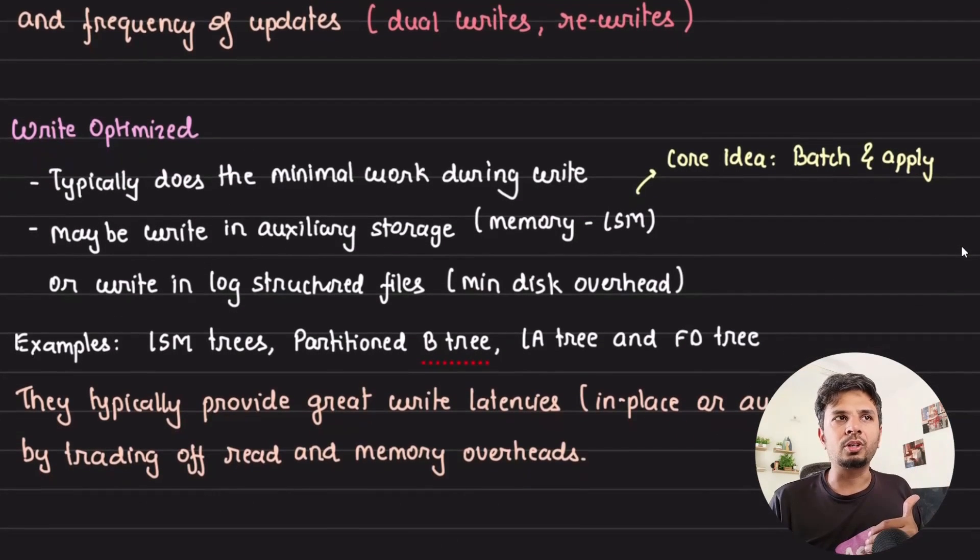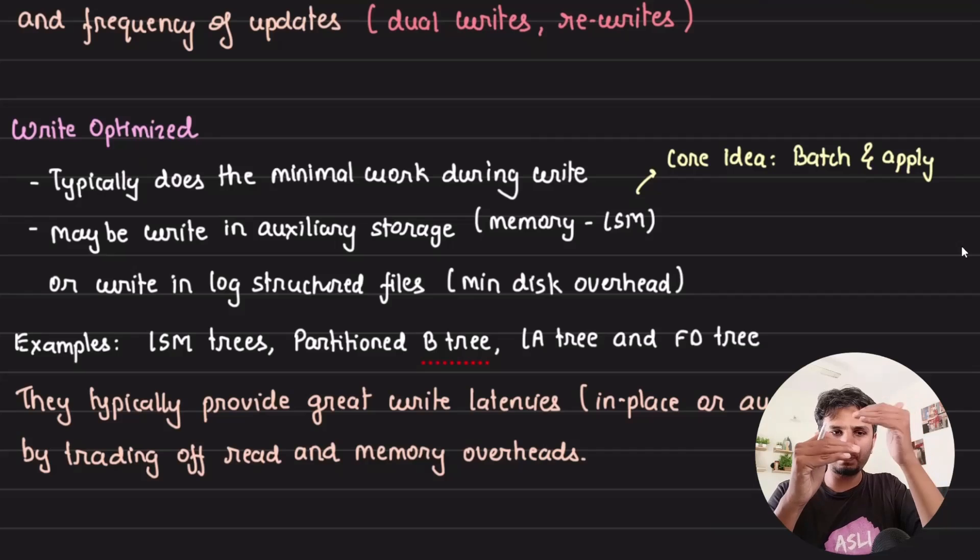Let's look at write-optimized workloads. As we saw with log-structured storage where we were simply appending key-value pairs one after another, we typically do the bare minimum when it comes to writes. LSM trees accept writes in memory and then periodically flush to disk, making them very write-optimized. But when we do this, we require an additional buffer and auxiliary storage. We typically get great write latencies by trading off read latencies and memory overheads.